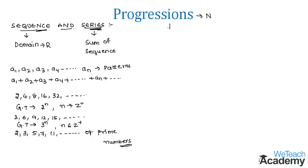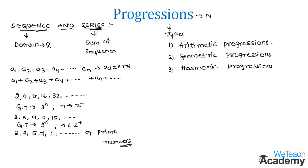Now let us discuss the types of progressions. We have three types of progressions: Arithmetic progressions (AP), Geometric progressions (GP), and Harmonic progressions (HP).